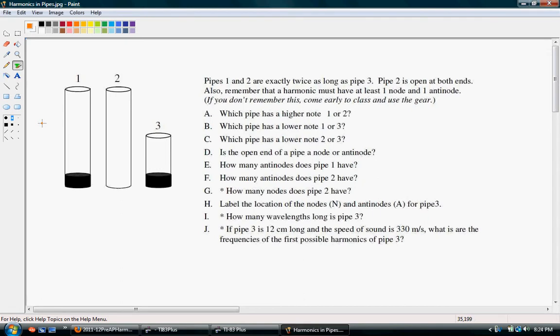For one wavelength in a closed pipe, we need 4 times the length of the pipe. For an open pipe, we only need 2L.